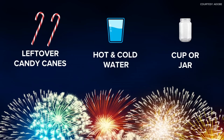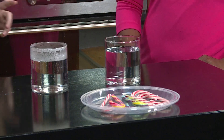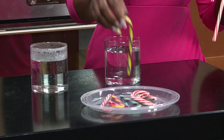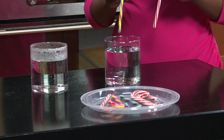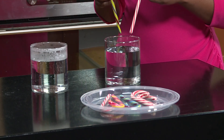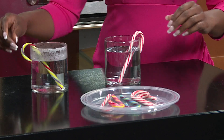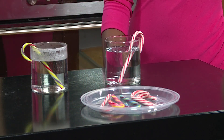So this is what you need: literally leftover candy canes, hot and cold water, and a cup or a jar. What we have right in front of us is hot water in front of me, cold water in front of Caitlin. So Caitlin, I want you to take two candy canes — you can pick whatever color you want, I have a variety of colors — and I want you to put one color in the cold and one color in the hot. And then we're gonna observe what happens.